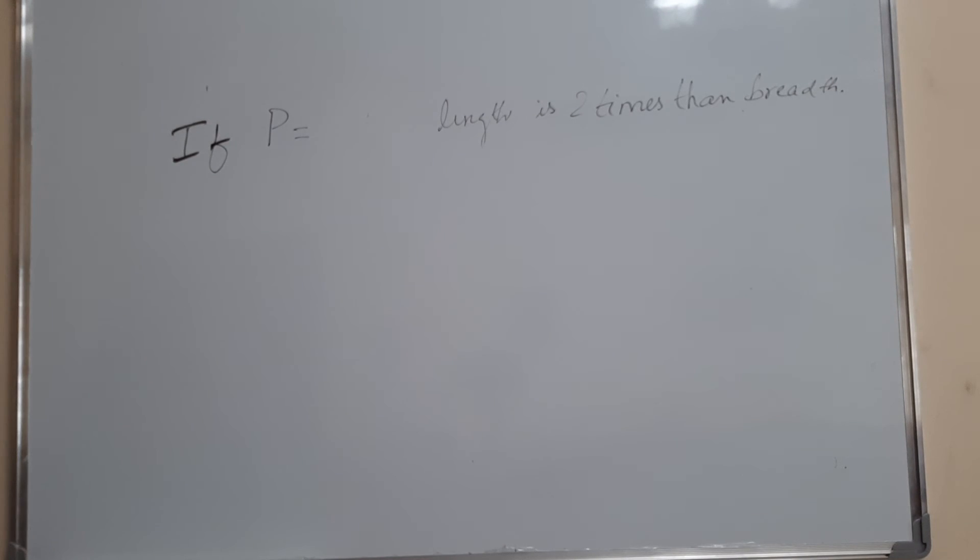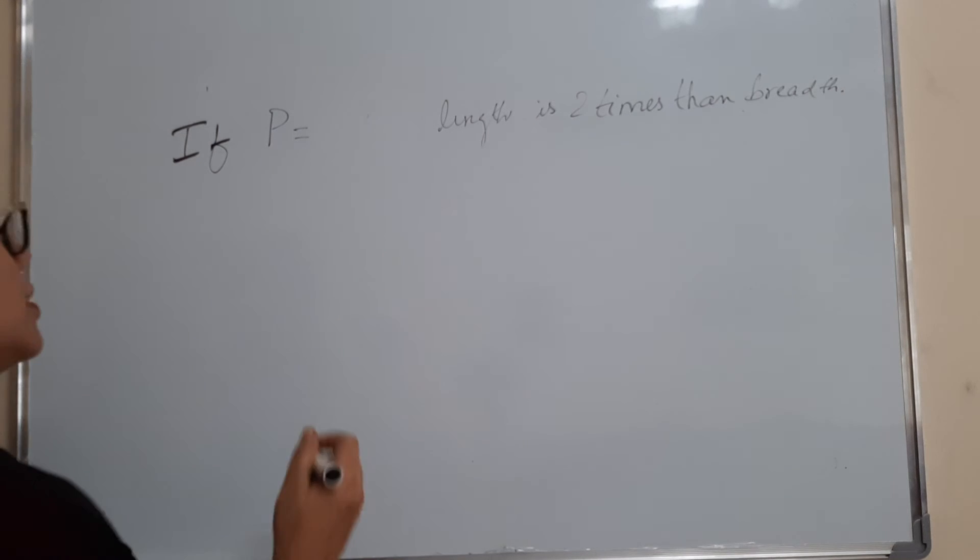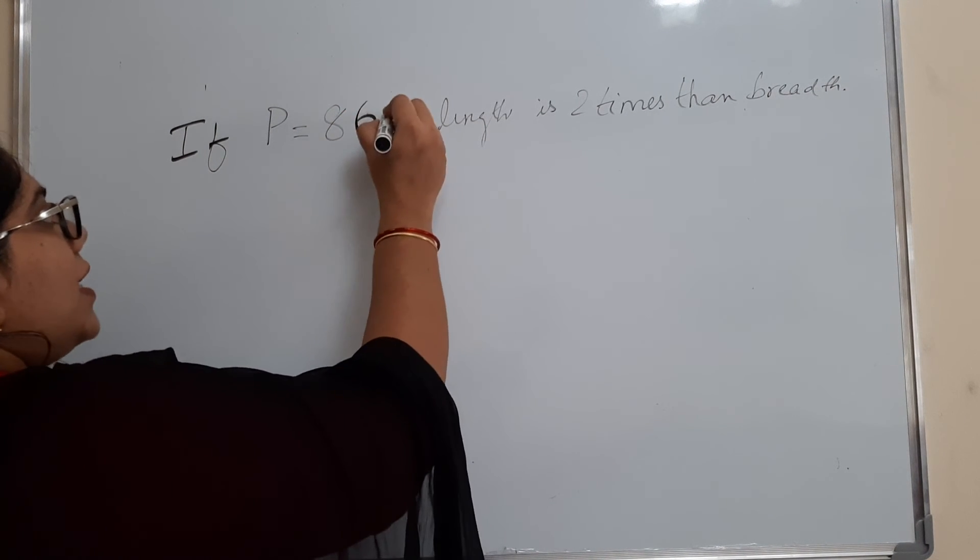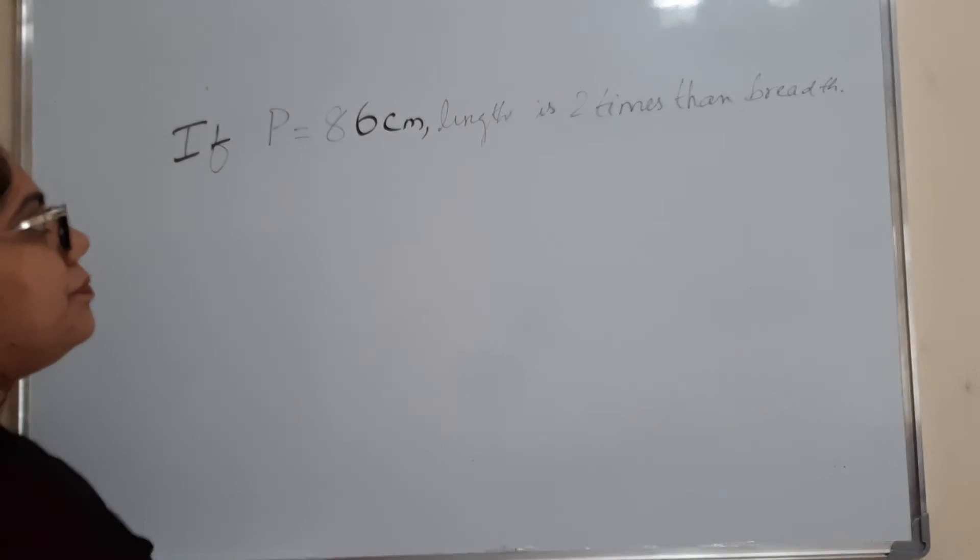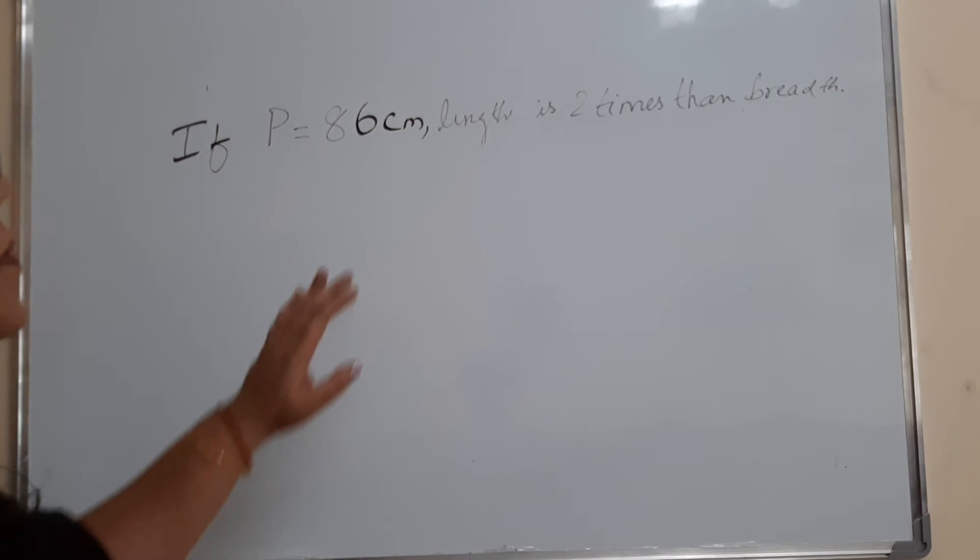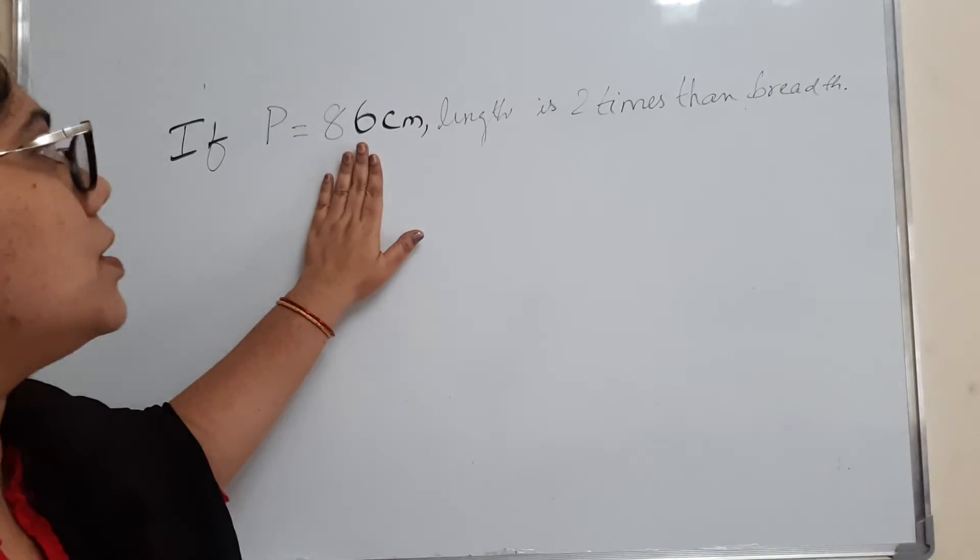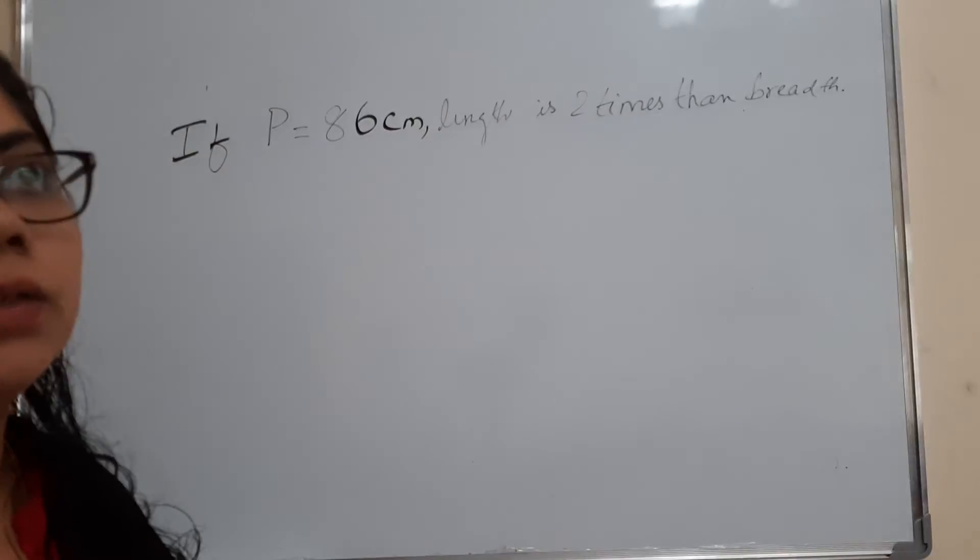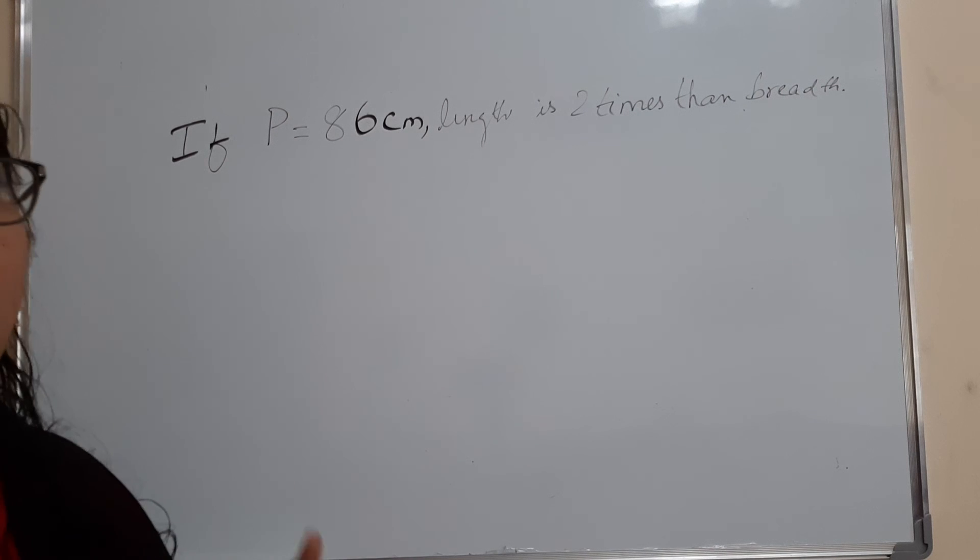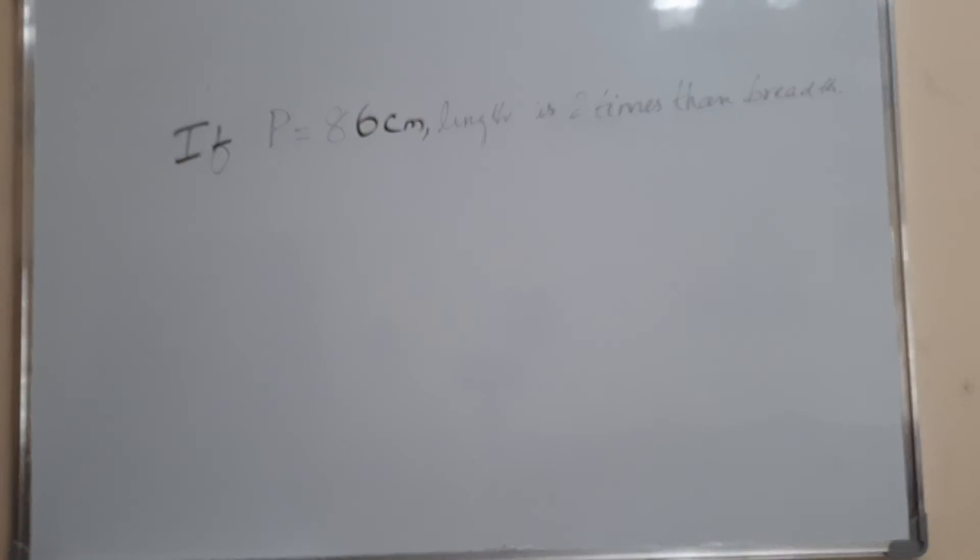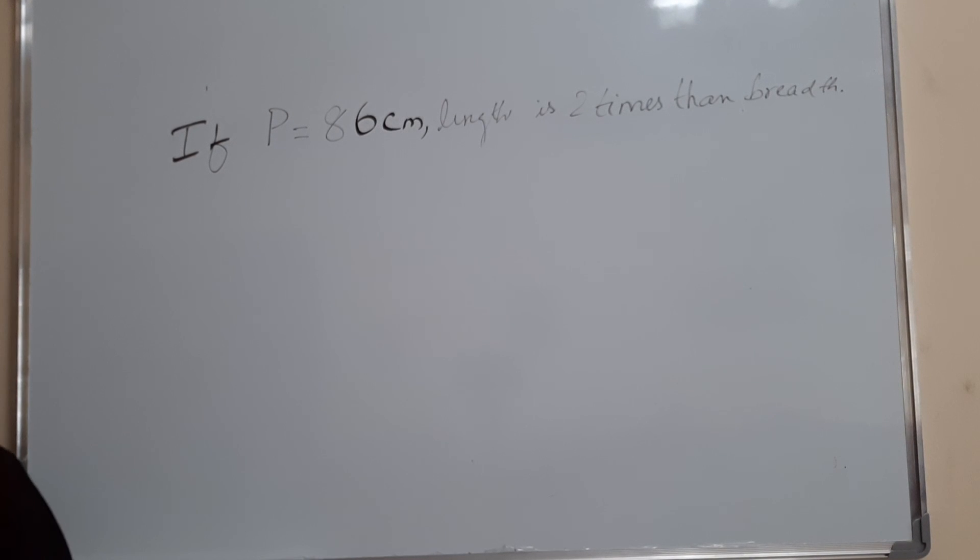Now this is the question for your test. Perimeter is equal to 86 centimeters. The length is 2 times the breadth. Find the length and breadth. This is the question for you. Solve it and write the answer in the comment. Hope you all understand.